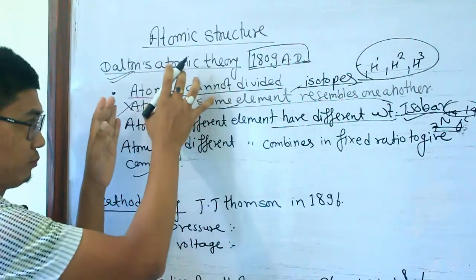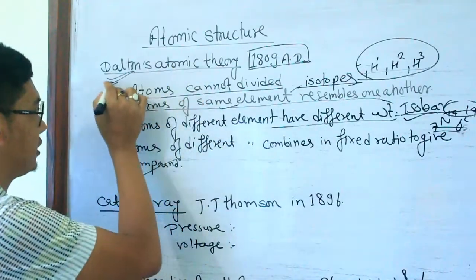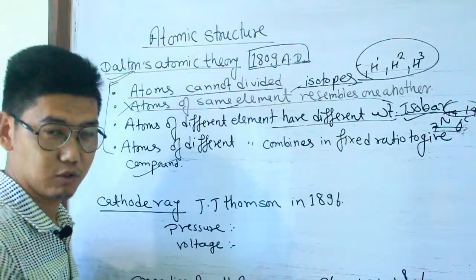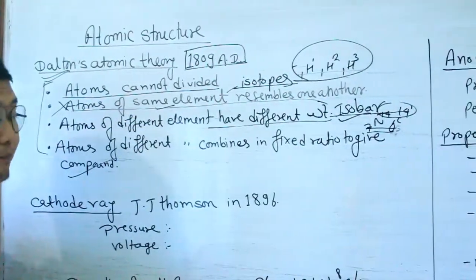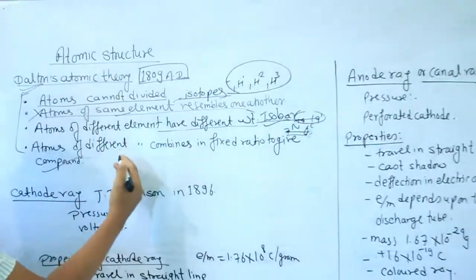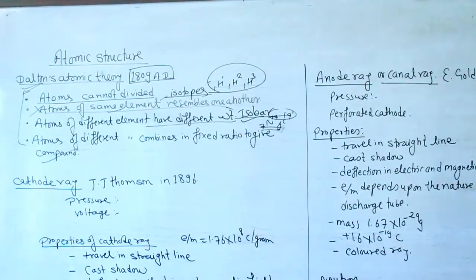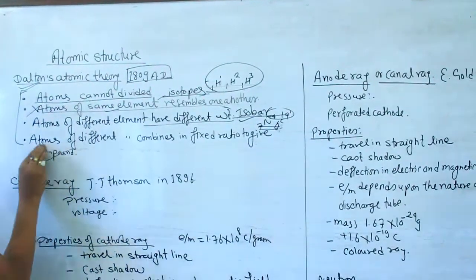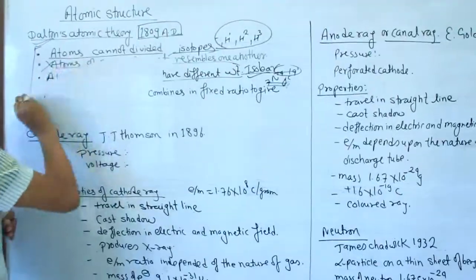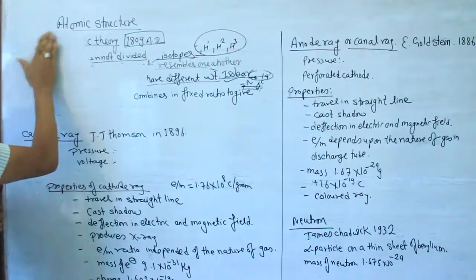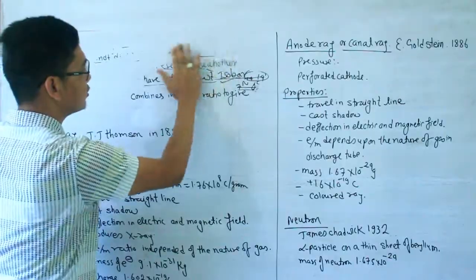However, Dalton's theory has failures at certain points. We need to explain those failures. To understand atomic structure further, we need to look at the cathode ray — the discharge tube experiment.